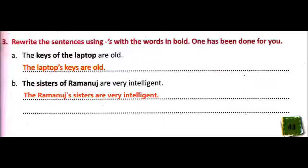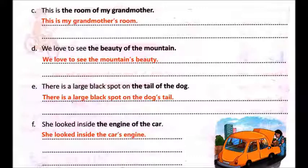Then 'the sisters of Ramanuj are very intelligent' — with apostrophe S: 'Ramanuj's sisters are very intelligent'. Both sentences tell us whose sisters are intelligent — Ramanuj's. Then 'this is the room of my grandmother' — with apostrophe S: 'this is my grandmother's room'. Then 'we love to see the beauty of the mountain' — 'we love to see the mountain's beauty'. Then 'there is a large black spot on the tail of the dog' — 'there is a large black spot on the dog's tail'. Then 'she looked inside the engine of the car' — 'she looked inside the car's engine'.